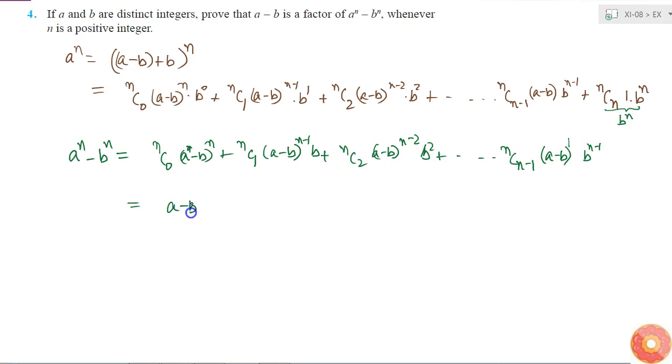So I can write it as (a-b) times [nC0 (a-b) to the power n-1, plus nC1 (a-b) to the power n-2 times b...